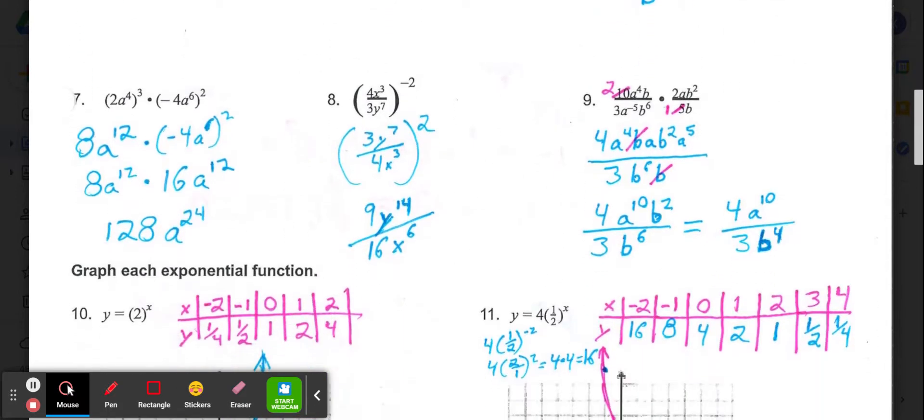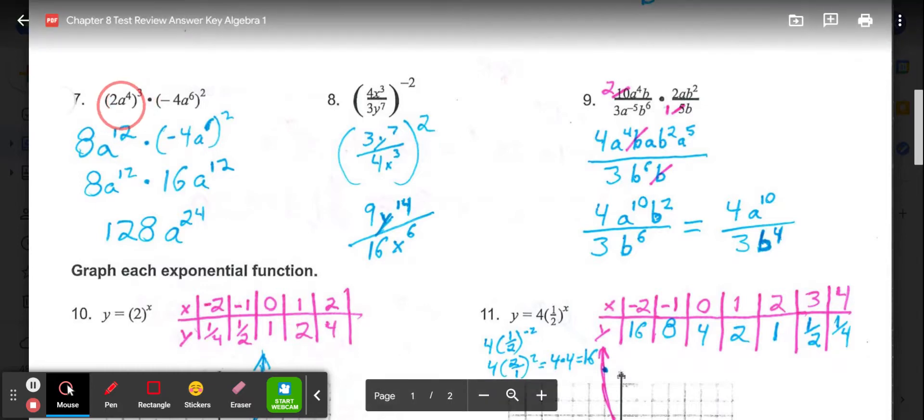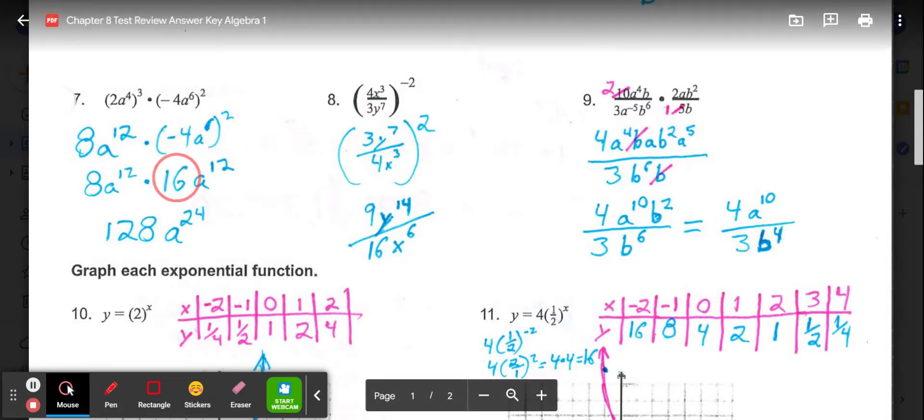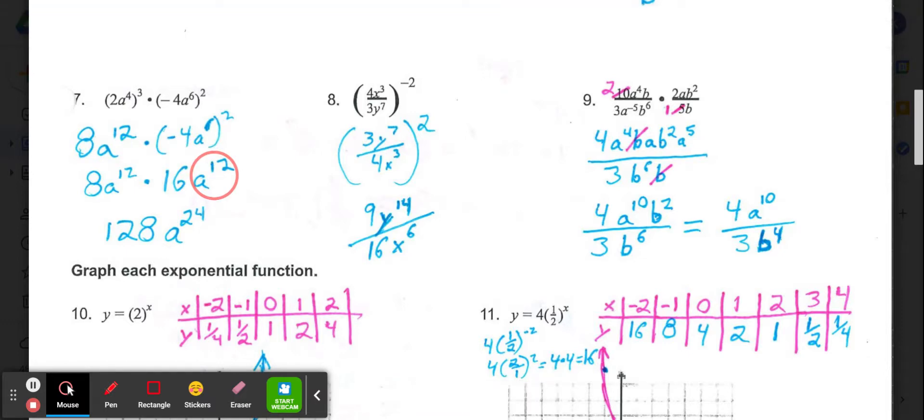Then in number 7, we first have two different terms in parentheses going to powers, so I'm going to simplify those. In parentheses, 2a to the 4th to the 3rd power would give me 8a to the 12th. Then to simplify the negative 4a to the 6th in parentheses to the 2nd power, negative 4 squared is 16, a to the 6th squared is a to the 12th.